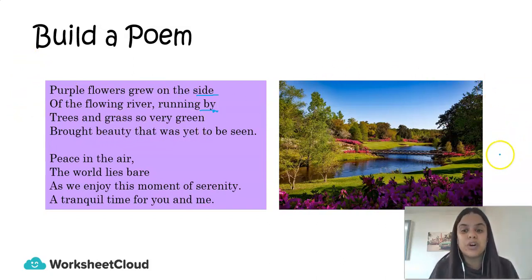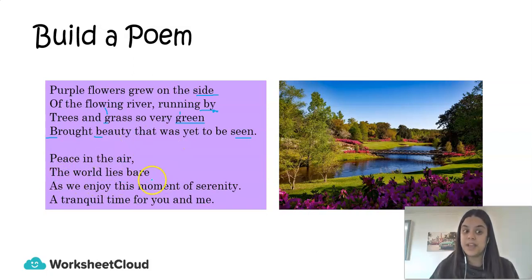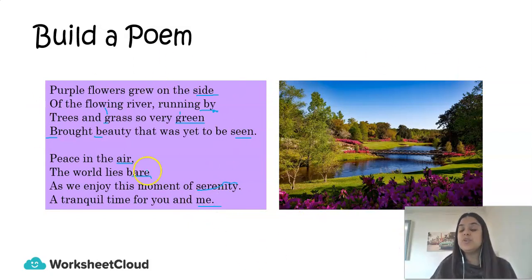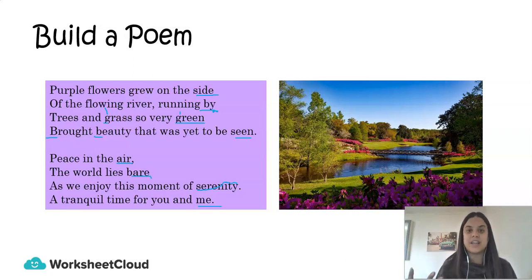I'm describing the beauty of this picture. I have my rhyming words, and I also have alliteration: 'brought beauty.' And if you look very closely, 'grass' and 'green' are also close together. Then: 'Peace in the air, the world lies bare. As we enjoy this moment of serenity, a tranquil time for you and me.' So 'air,' 'bare,' 'serenity,' and 'me' provide the rhyme scheme. The poem is describing this picture — there's a calmness, tranquility, and peace — and my poem is using that tone throughout because I want the reader to understand how calm, peaceful, and beautiful this place is.